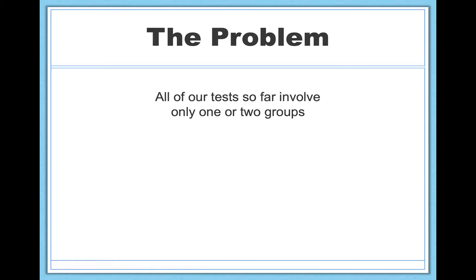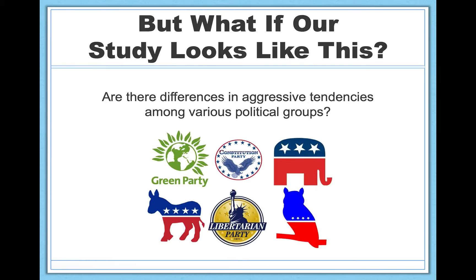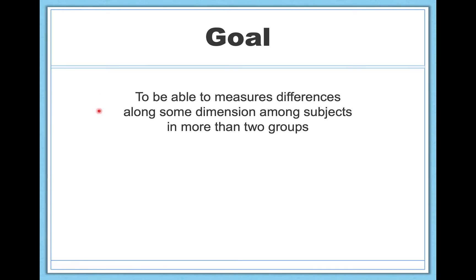All of these tests so far involve only one or two groups of people. So the question is, what happens if you have more than two groups of people that you'd like to compare? For example, are there any differences in aggression among various political groups? There's more than two political groups — Republicans, Democrats, Green Party, Constitution Party, Libertarians, Modern Whigs, and more. Even an independent samples T test would not be sufficient. The goal is to measure differences along some dimension among subjects in more than two groups.